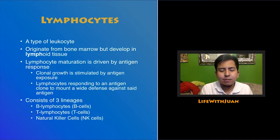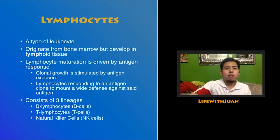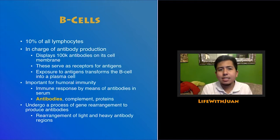There are three main kinds of lymphocytes: B lymphocytes, T lymphocytes, and NK cells, or natural killer cells.